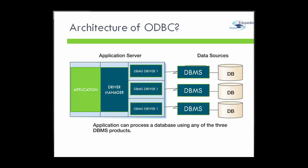Let us briefly understand about the architecture of ODBC. ODBC consists of a data source, an application program, a driver manager, and a DBMS driver. A DBMS driver processes the ODBC requests and submits the specific SQL statement to a given type of data source. A single tier driver processes both ODBC calls and SQL statements, whereas a multiple tier driver processes the ODBC calls but passes the SQL request to the database server.